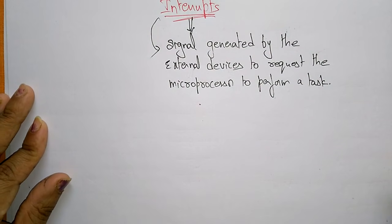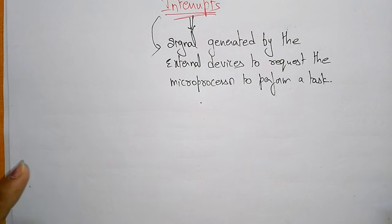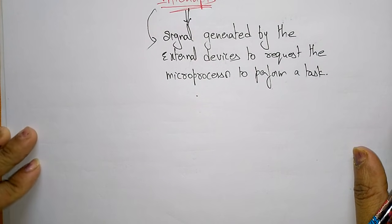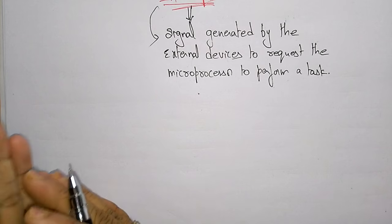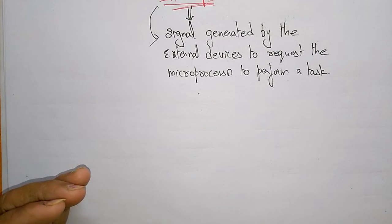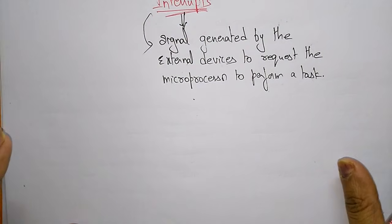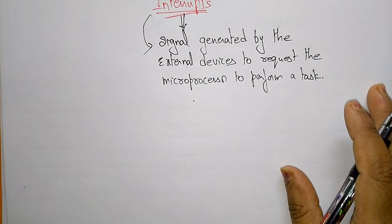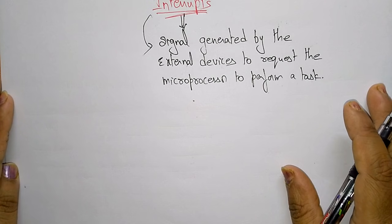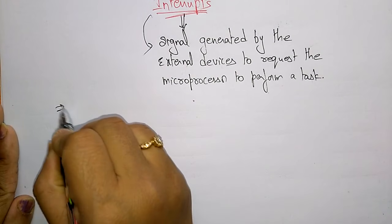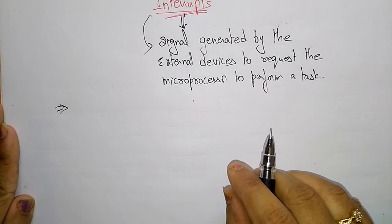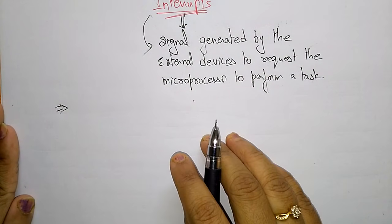Let us take some interrupts that are present in the 8085 microprocessor. Based on the microprocessor, different interrupt signals will be generated based on their configuration. In the 8085 microprocessor, interrupts are classified into groups based on their parameters.